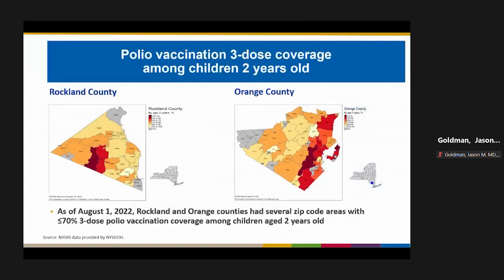Looking at vaccine coverage in two of the affected counties: this slide highlights the power of understanding vaccine coverage at the zip code level, which can illuminate heterogeneity even within a county. As of August 1st, 2022, Rockland County and Orange County had several zip code areas with less than 70% three-dose polio vaccine coverage among children two years old, shown in dark red.